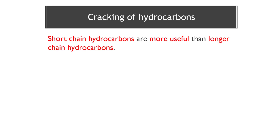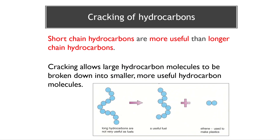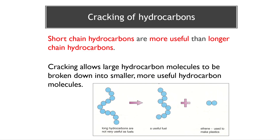The shorter chained hydrocarbons are a lot more useful and more valuable than the longer chained hydrocarbons. So if we've got lots of long chained hydrocarbons, why don't we just break them up to produce smaller, more useful hydrocarbons? And that's exactly what cracking is. Cracking allows you to break up these larger, less useful molecules into smaller, more valuable, more useful hydrocarbon molecules. We've got this long chained hydrocarbon - not too useful - but if we crack it, we can produce more useful, smaller hydrocarbons.